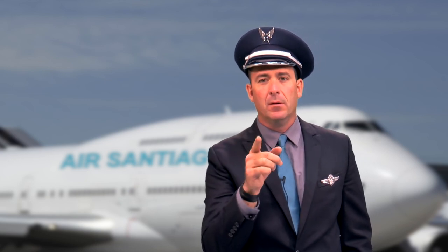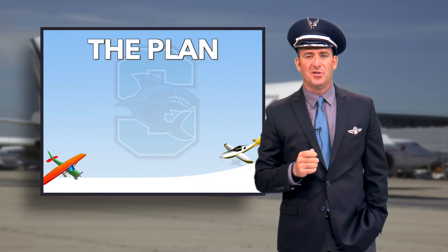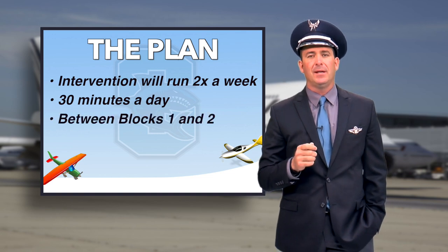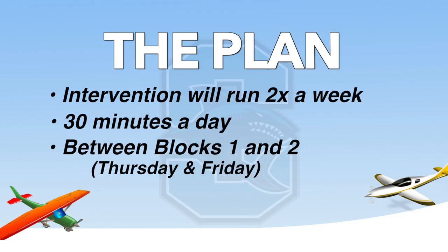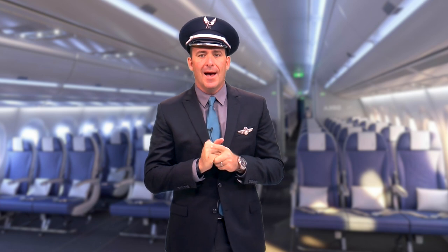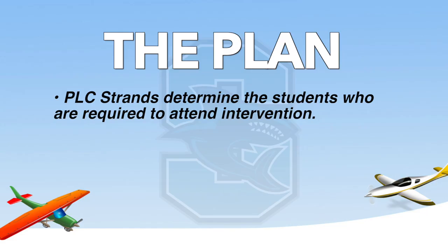First, we need to examine our flight plan. We need to look at what we might expect as we begin to get airborne with our intervention process, and we are seeking input from you as we begin our travel excursion ideas. To start, we'll be flying two days a week. Our flight will last 30 minutes and we'll be flying between first and second block. We need all crew and all passengers on board. We have very special booking agents — those will be our PLC strands. Our strands will decide the destination, the itinerary, and they'll decide where and when, all under a local control formula.